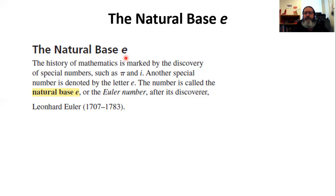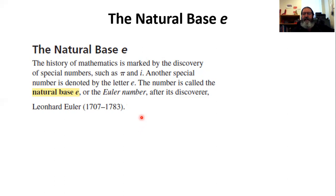E is a number that was discovered — and I say discovered, not created, because E is a naturally occurring number. It's a number that has always existed in the realm of mathematics. Euler was the one who discovered it and pinned it down to the value we know today. Since his time, using computers, we have calculated E out to many millions of places, just like we have pi.